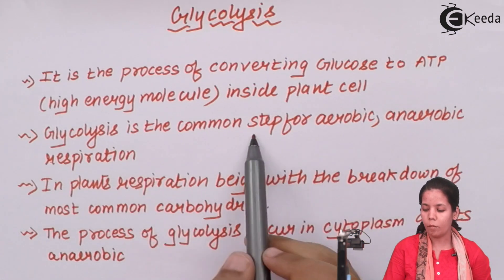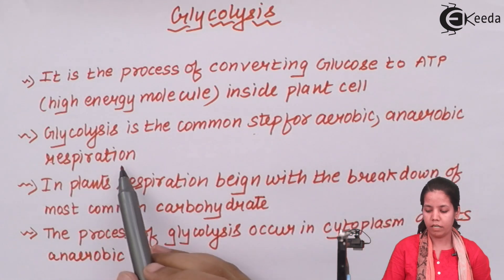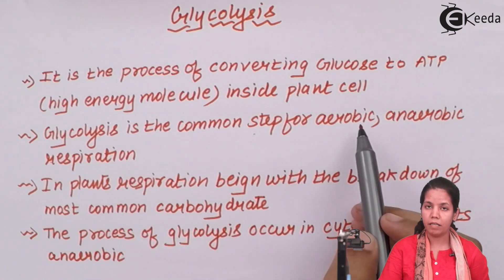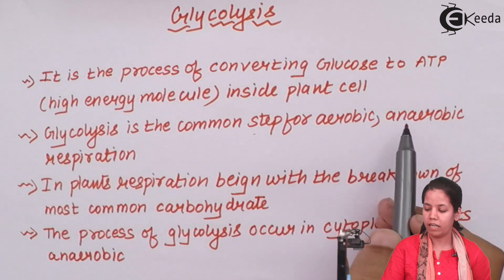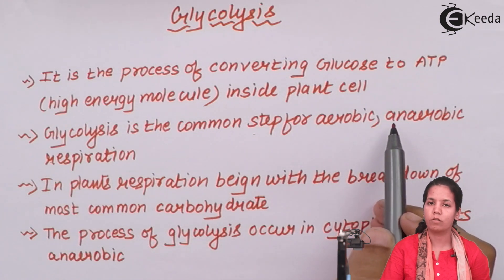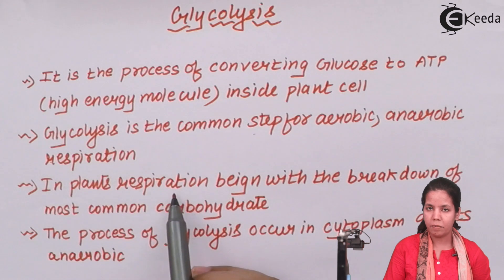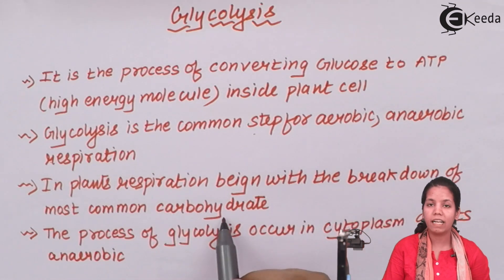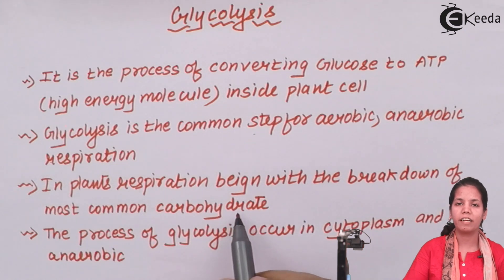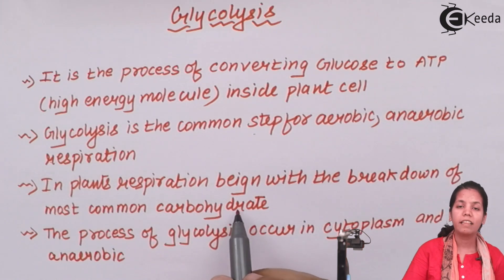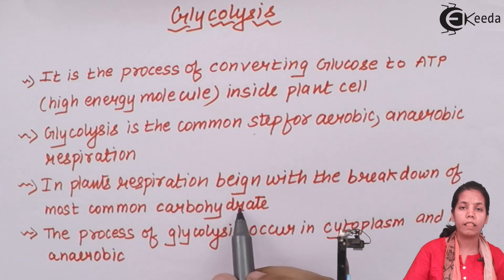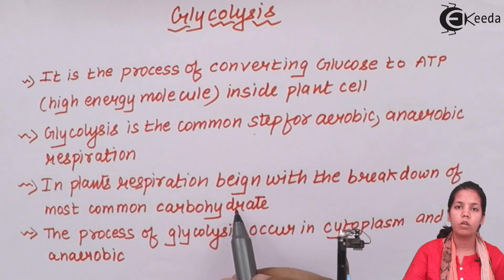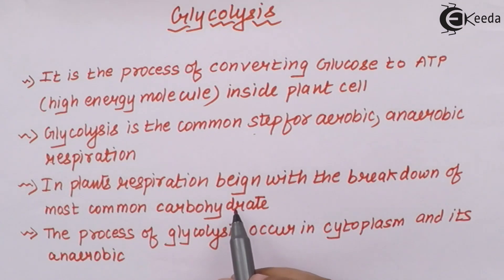Glycolysis is a common step for both aerobic and anaerobic respiration. Aerobic means in the presence of oxygen; anaerobic means in the absence of oxygen. In plants, the respiration process begins with the breakdown of the most common carbohydrate — glucose. Glucose, fructose, and sucrose are all carbohydrates, and glucose is the carbohydrate that undergoes the glycolysis process.